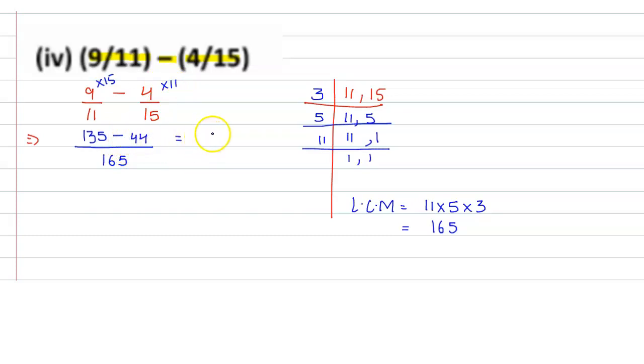So here we get 135 minus 44, which is 91 upon 165. So this is our answer. I hope this question is clear. Thank you.